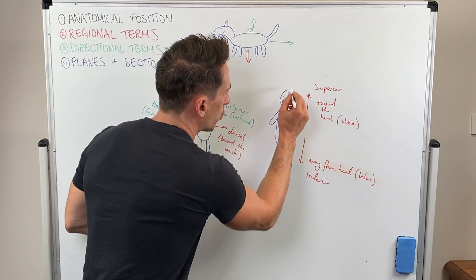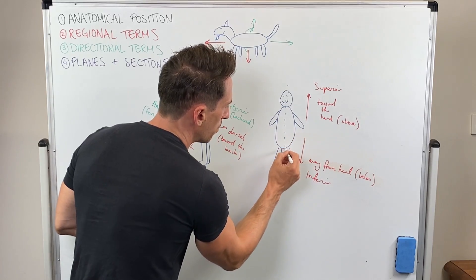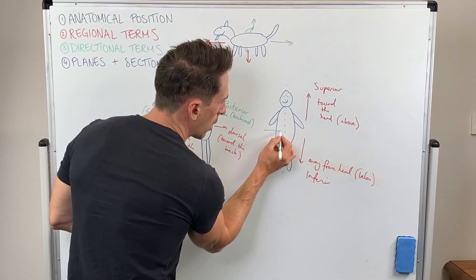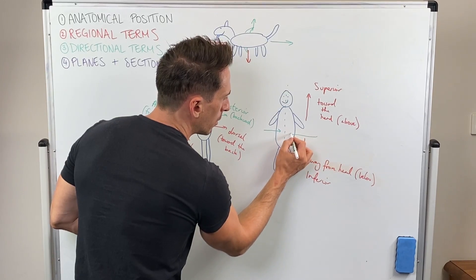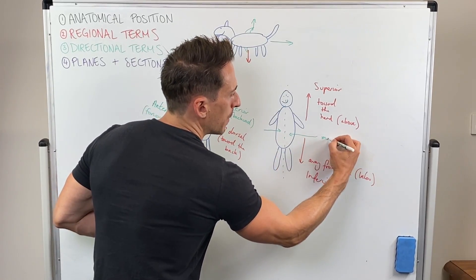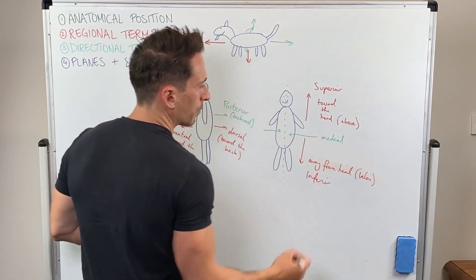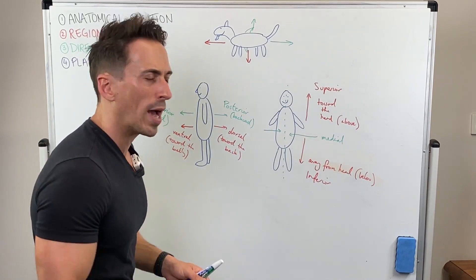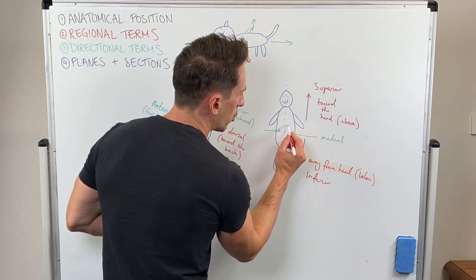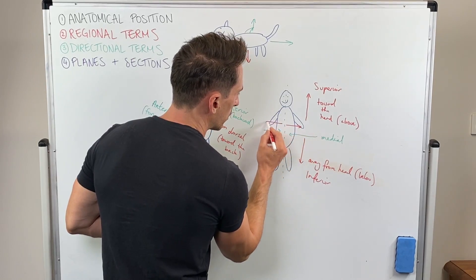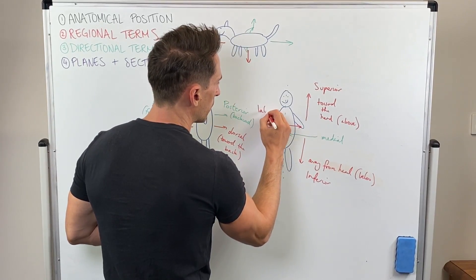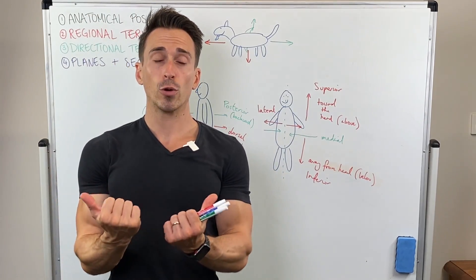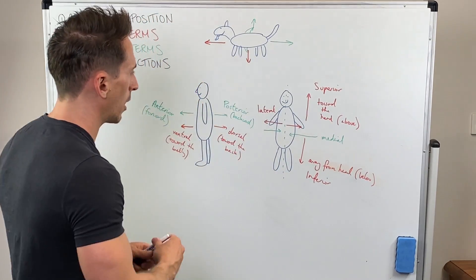We also need to talk about towards the midline of the body. If something is towards the midline of the body, it's called medial. And if a structure is away from the midline of the body, it's called lateral. Medial towards the midline, lateral away from the midline.